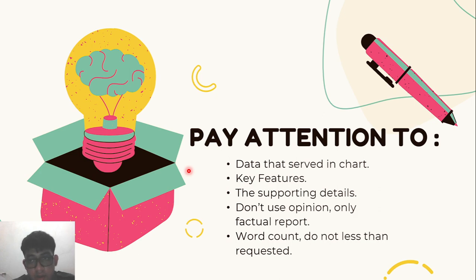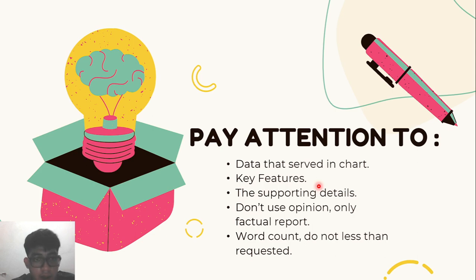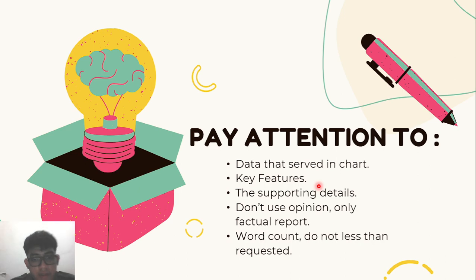There is also some important information to pay attention to when doing IELTS Writing Task 1. First is the data presented in the chart. Second, pay attention to key features like the title. Third are supporting details — factual data like numbers served to you in the chart. Do not use opinions in a factual report. Every statement you make must be based on the factual data shown in the chart, not your own opinion.